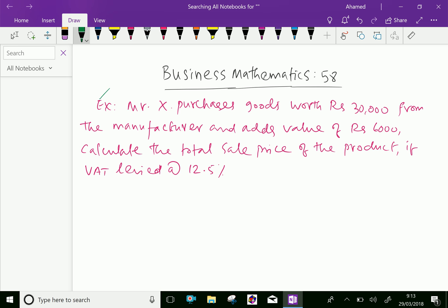Example: Mr. X purchases goods worth Rs. 30,000 from the manufacturer and adds value of Rs. 6,000. Calculate the total sale price of the product if VAT levied at 12.5%.